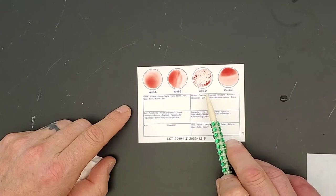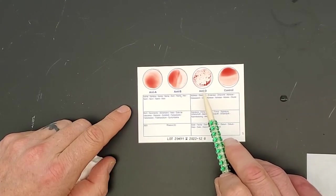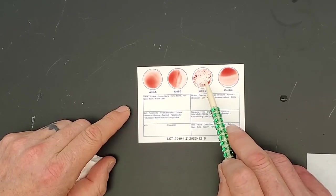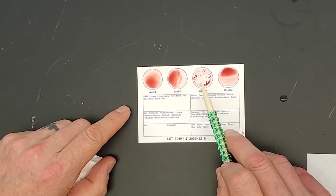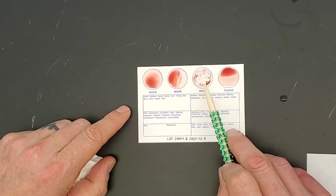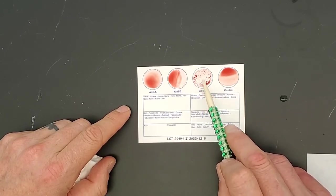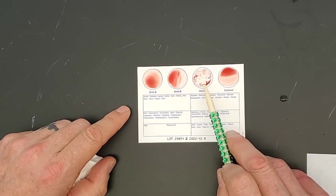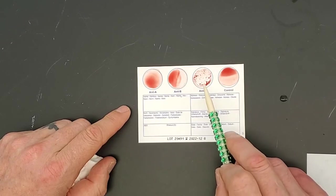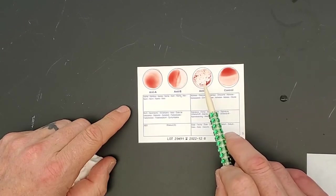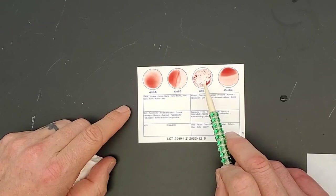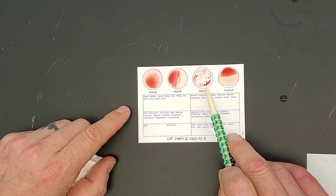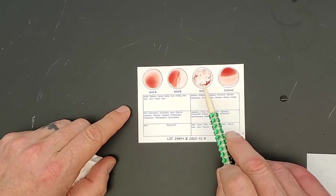And then here in the anti-D circle, which if you recall is for RH, we do see a clumping up of the red blood cells there. It kind of looks like it's turned into red cottage cheese. That reaction is called agglutination. Agglutination is the clumping of cells caused by the presence of an antibody. In this case, antibodies against RH bound to the RH glycoproteins on the surface of my red blood cells and caused my red blood cells to clump up like that. So that's positive for RH.